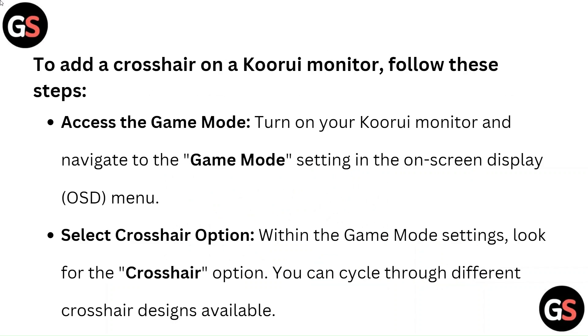Select the crosshair option. Within the game mode settings, look for the crosshair option. You can cycle through different crosshair designs available.